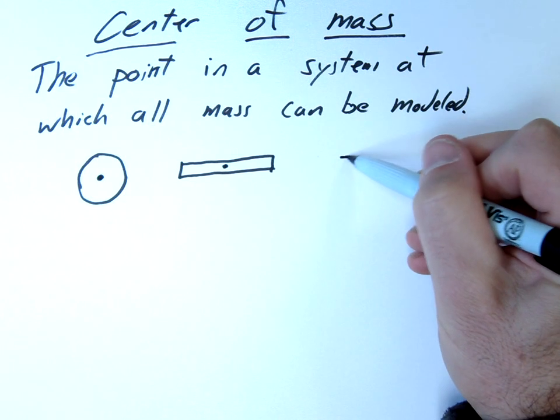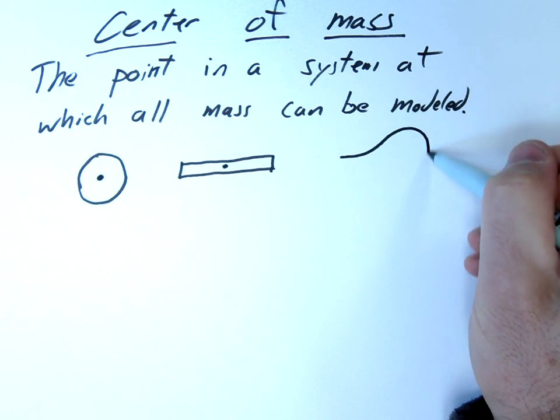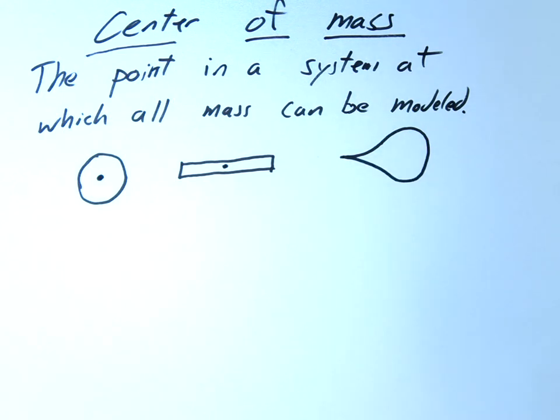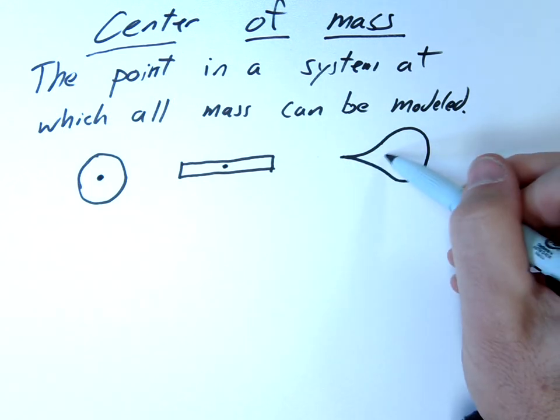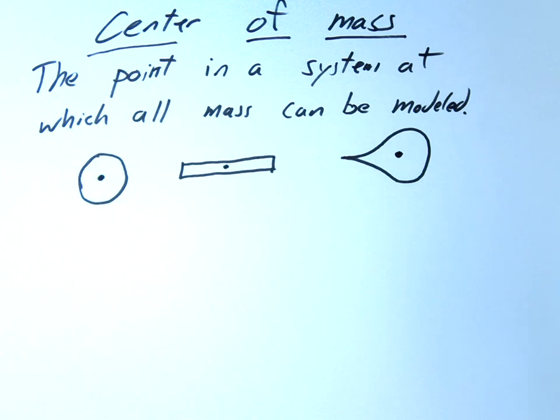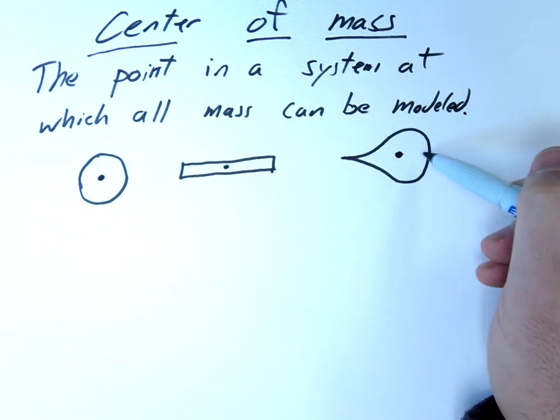Let's imagine we have a shape that's kind of weird. Maybe it looks something like this. In this case, it wouldn't be right in the center because more of the mass is towards the right side. So maybe it's somewhere here, offset of center towards the right, but not in the middle of this circle.